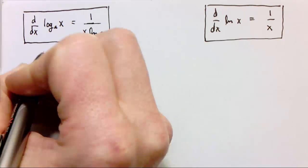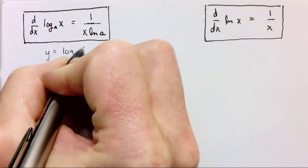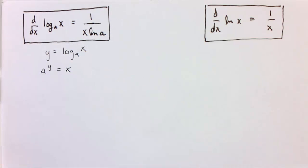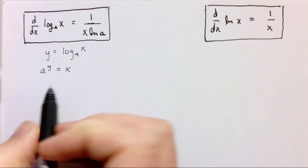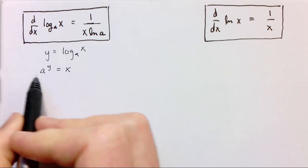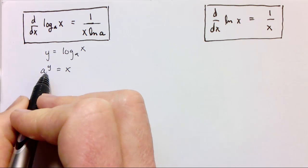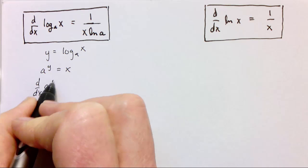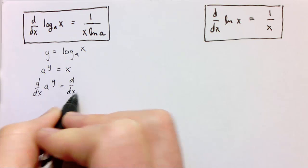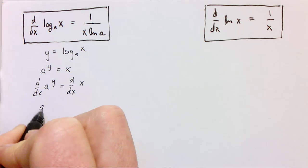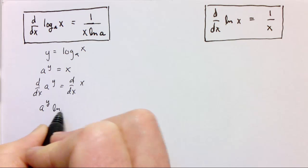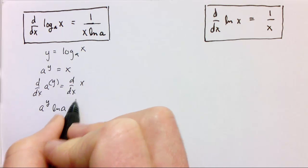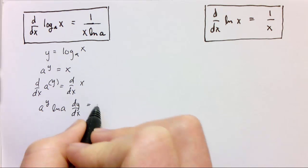Where does that rule come from? Well, if we say y is equal to log base a of x, then that's the same as saying a to the y equals x. Now we're going to use implicit differentiation to find the derivative. The derivative of an exponential function is that exponential function times the natural log of the base. In this case we have an inside function y, so we have to string along a dy/dx, and that's equal to 1.